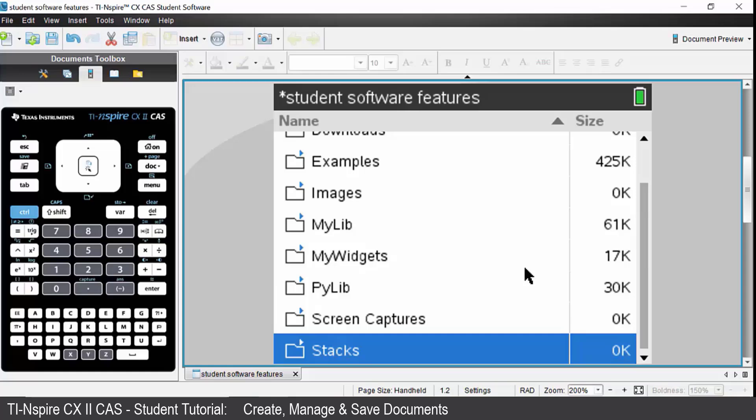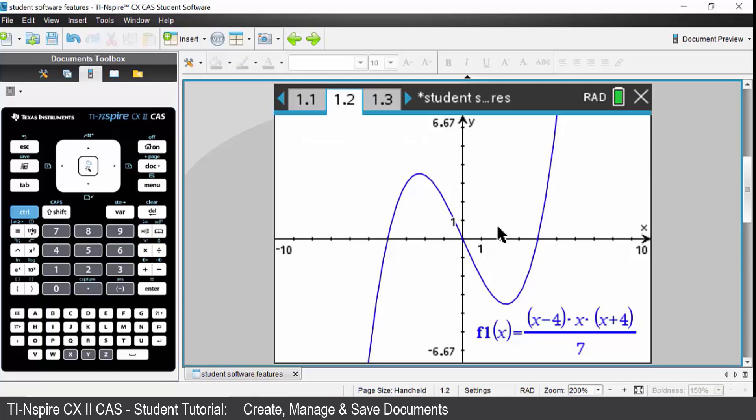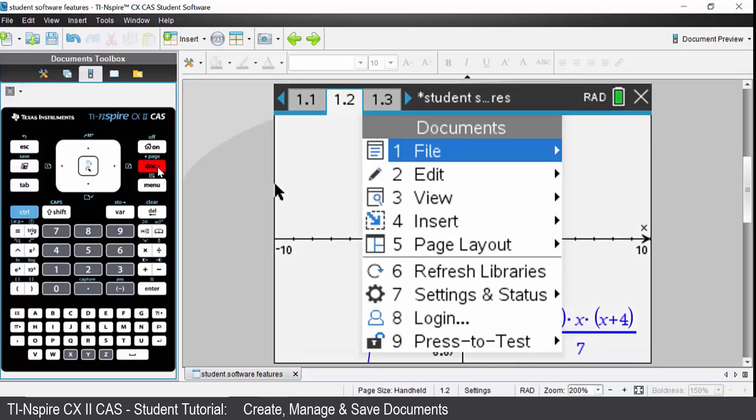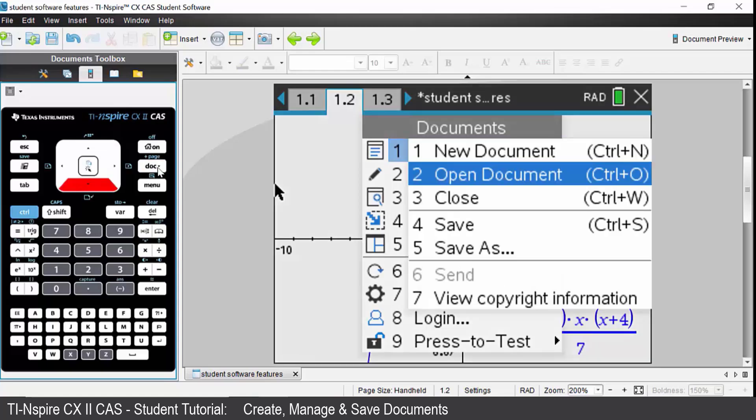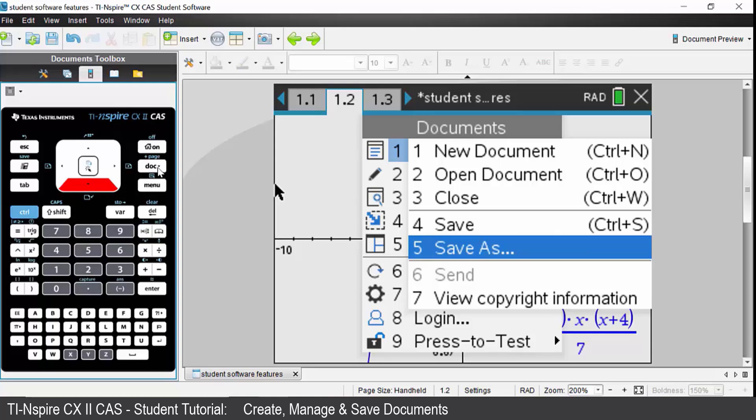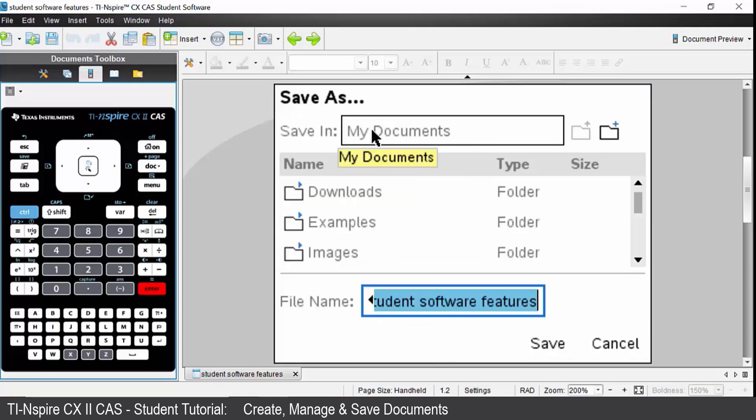You may wish to create a document on the handheld and save it to a folder on the handheld. To do that, come to the document that you have created on your handheld. You now want to save it directly onto your handheld. To do that, press the dot key. Option 1 is file. Come down to option 5 which is save as. It will prompt you to save it into the my documents folder. You can save it directly into there by giving it a file name.